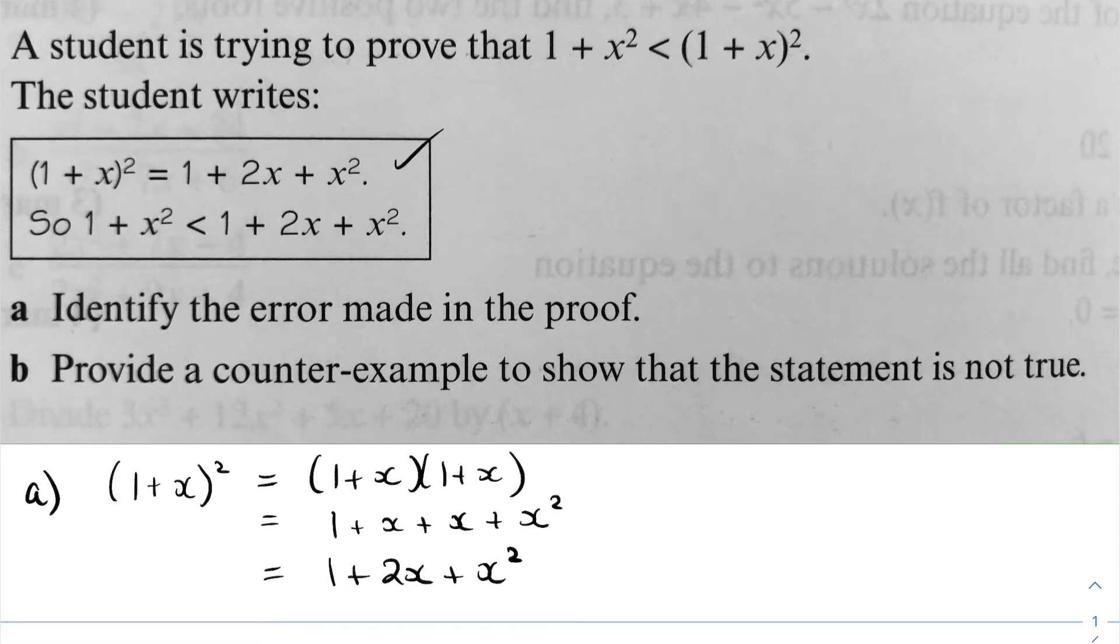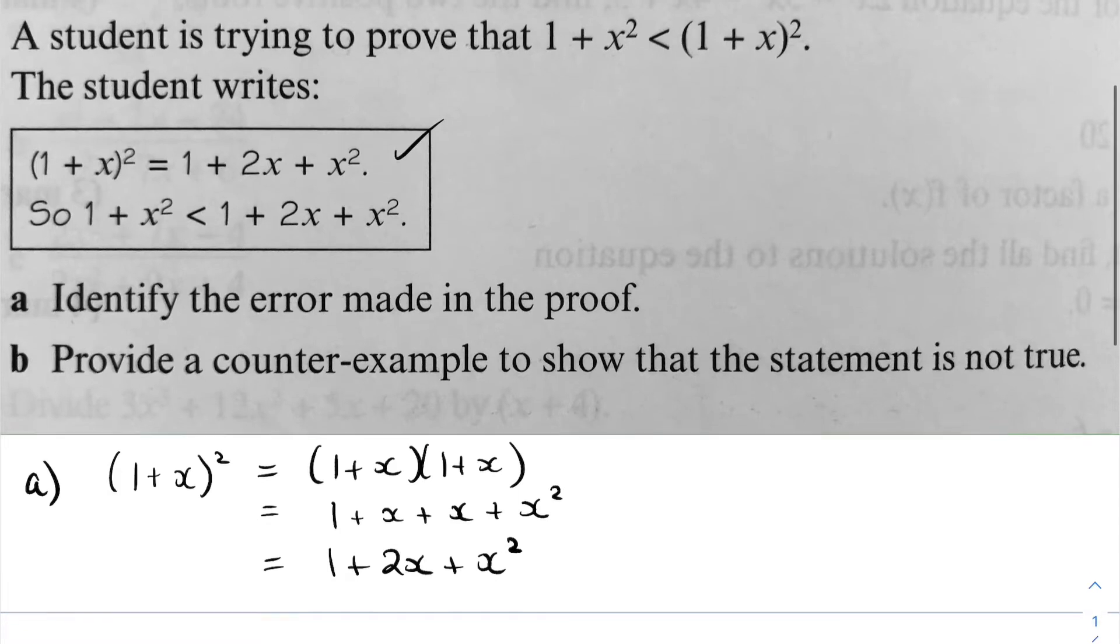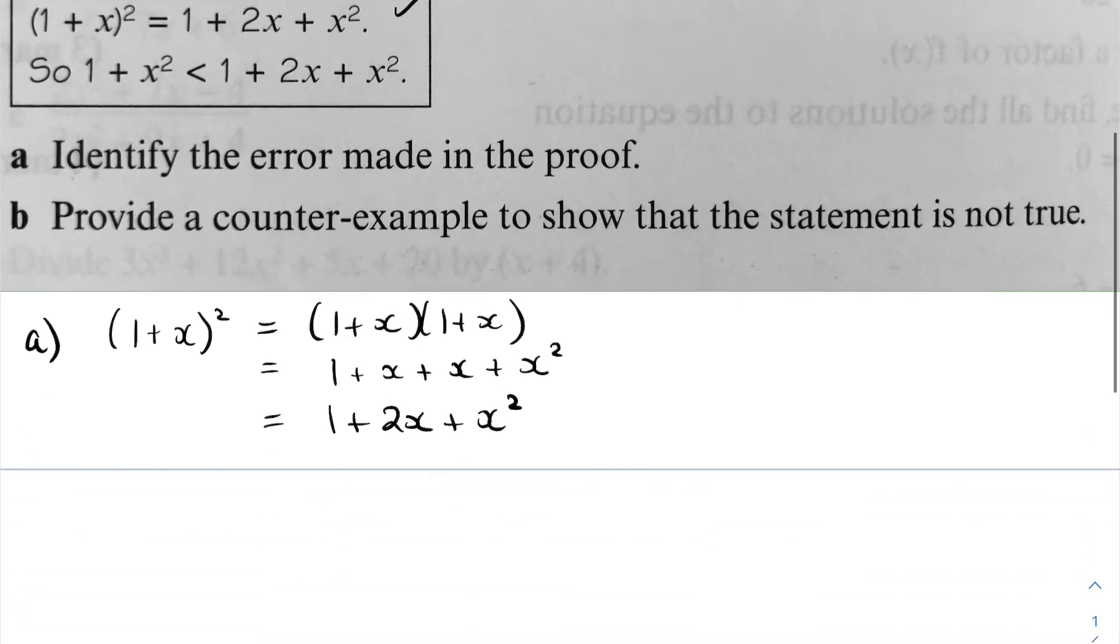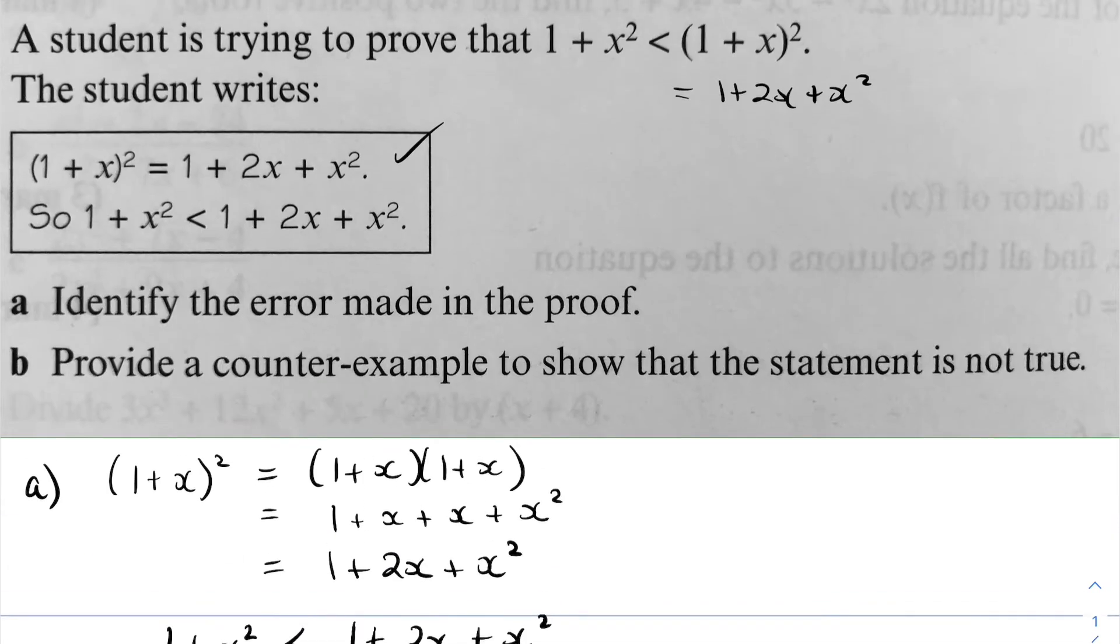Now I'm assuming the student is trying to find an expression for this right-hand side. He's then concluded that 1 plus x squared is less than 1 plus 2x plus x squared. The first problem is that the student has assumed that that original expression is true.